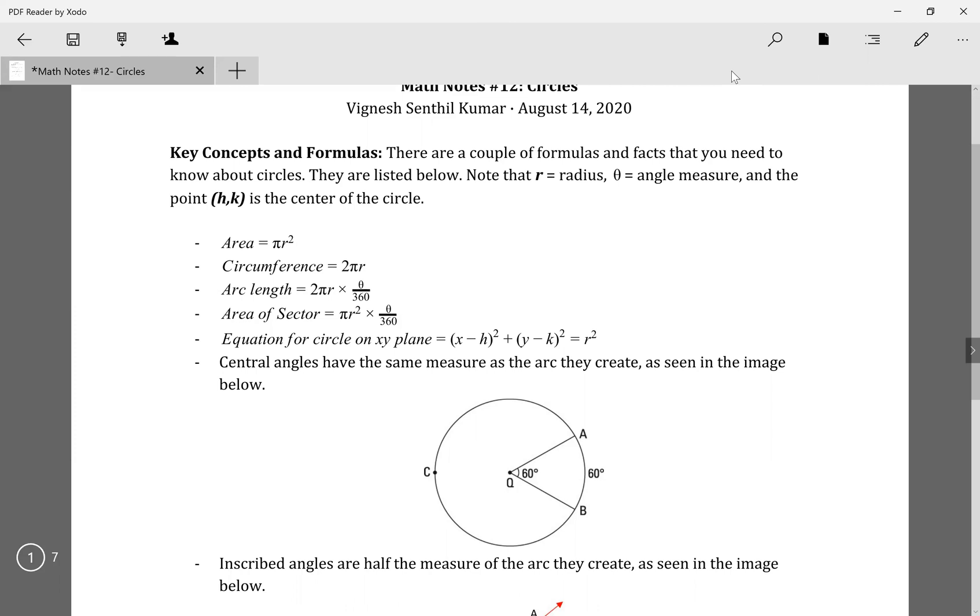Basically how it works is whatever the proportion of this angle to the whole circle, that proportion is the same as the arc length proportion to the whole circumference of the circle. That's basically what it is.